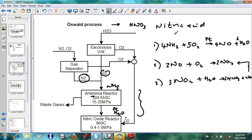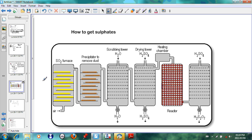Now in today's lesson we will look at the manufacture of sulfuric acid. How to get sulfates? To get sulfates you need sulfuric acid H2SO4. So this is the contact process.